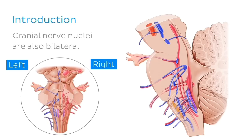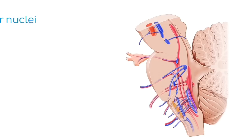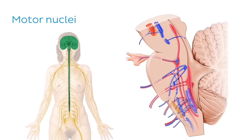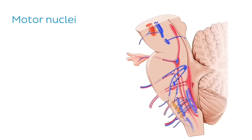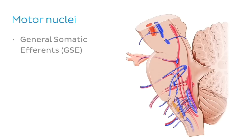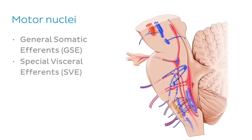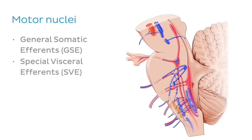The cranial nerve motor nuclei are further grouped according to their target tissues — that is, where the axons of the attached cranial nerves are sent. Motor nerves travel from the central nervous system to somewhere further away and can be referred to as efferent. Cranial nerve nuclei with motor functions can be grouped as: general somatic efference, which innervates skeletal muscles; special visceral efference, which innervates the musculature of the pharyngeal arches; and general visceral efference.